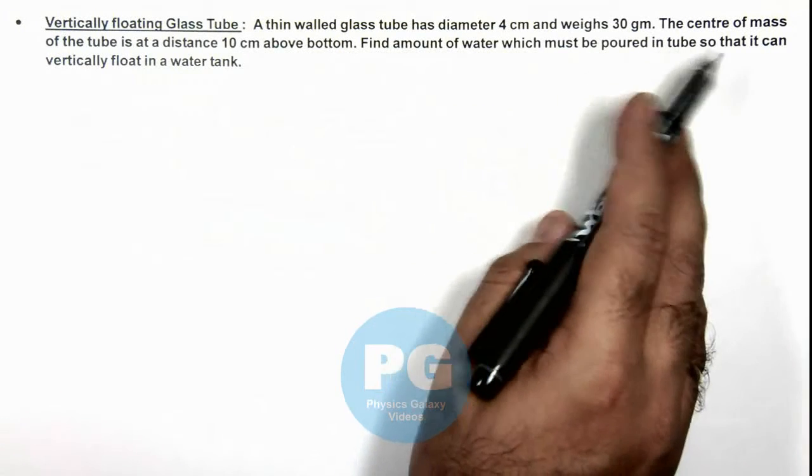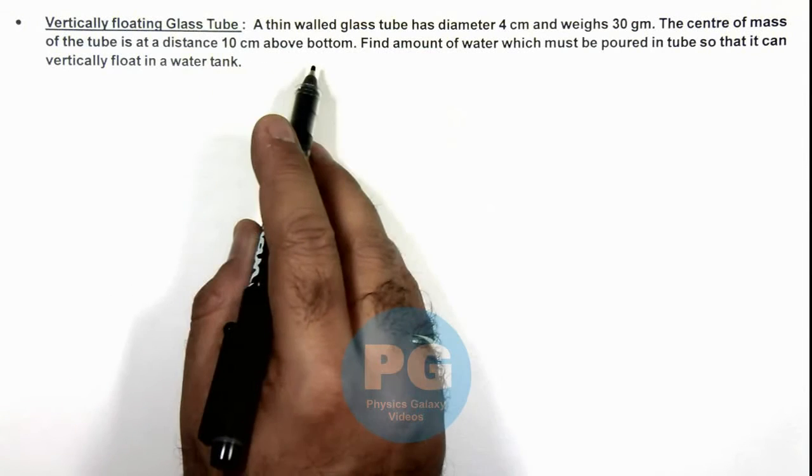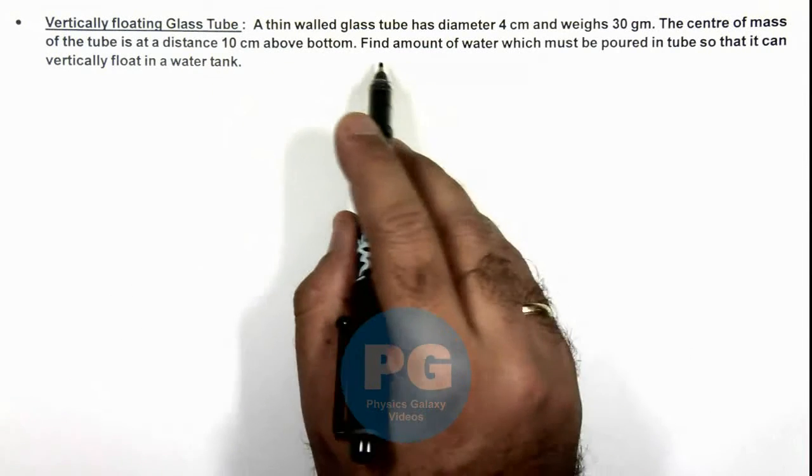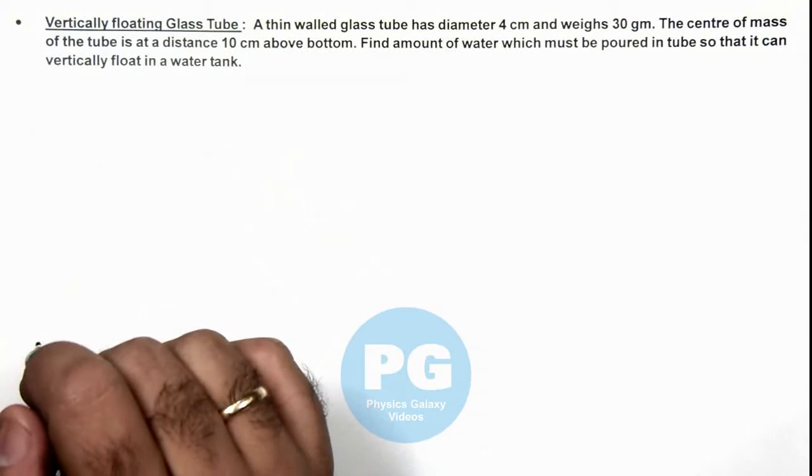And the center of mass of the tube is at a distance 10 centimeter above the bottom. We are required to find the amount of water which must be poured in the tube so that it can vertically float in a water tank.